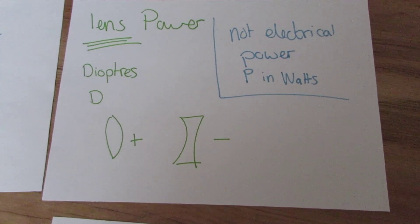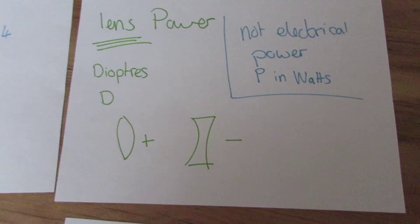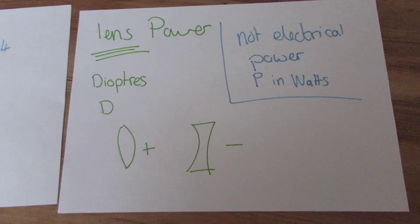If it is a converging lens, it's going to have a positive value, and if it's a diverging lens, it's going to have a negative value.